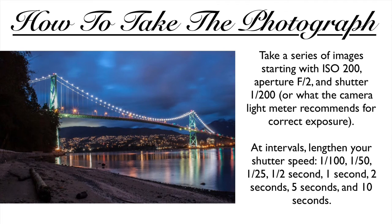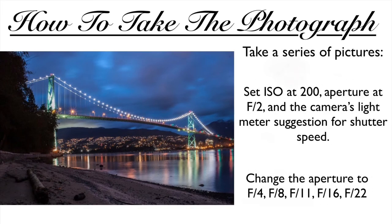Choose a shutter speed and continue to change it by making it longer. For example, start with a shutter speed of 1/200th of a second, then change it to 1/100th, 1/50th, one half second, one second, two seconds, five seconds, and ten seconds. Start by setting aperture at a wide setting of f/2, then narrow it to f/4, f/8, f/10, f/12, f/16, f/20, and f/22.